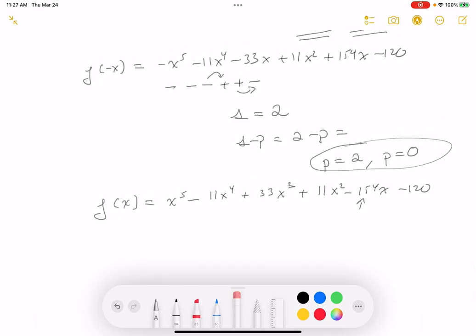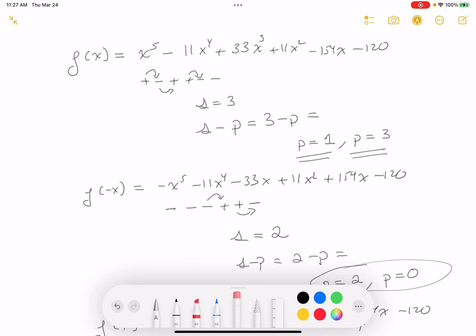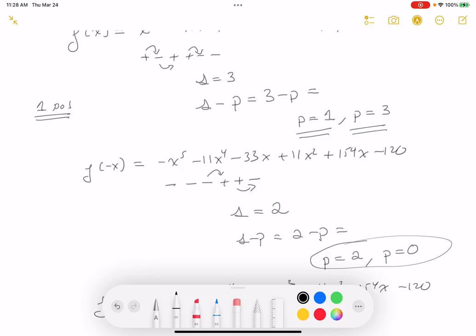So let's write this down. What do we have? It could be 1 positive and 4 complex. I took care of this. 1 positive, 2 negative, and 2 complex. I took care of the 1 completely.